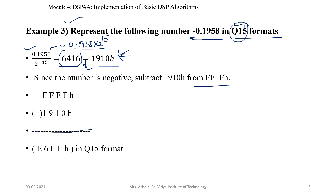The subtraction steps are: F minus 0 is 15, which is F; F minus 1 is 14, which is E; F minus 9 is 6; and F minus 1 is 14, which is E. So E6EF hexadecimal is the number minus 0.1958 in Q15 format representation.